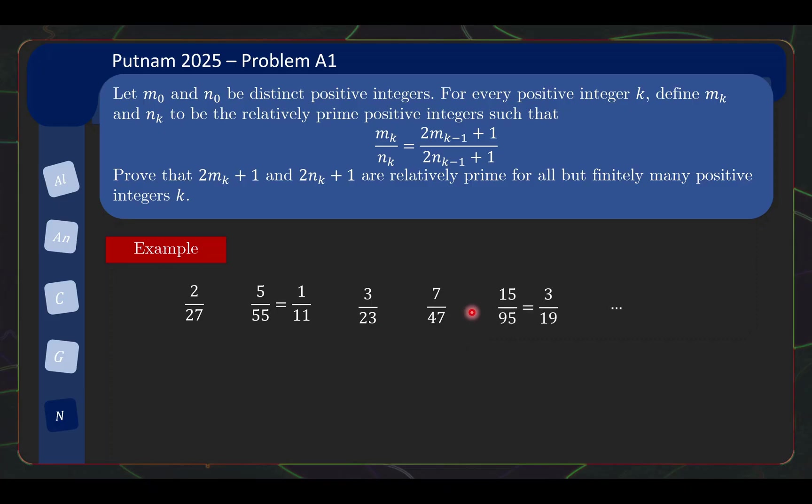Again, it's already in simplest form. But if you do it again, you realize you get 15 over 95 which can be reduced to 3 over 19. So this 3 and 19 are then your next m and n terms and so on. You see here that I have one time where I need to do reduction which means it's not relatively prime and I have another time where I need to do reduction. But the claim is these scenarios only happen finitely many times no matter what you start off with.